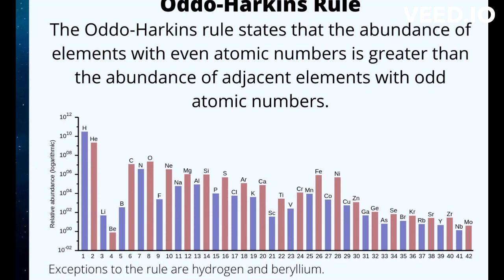Another explanation is that even atomic numbers mean protons are paired within the nucleus. Parity makes the nucleons more stable, as the spin of one proton offsets the spin of the other. Unpaired protons in odd-number elements more easily capture another proton and form an even-numbered atom.